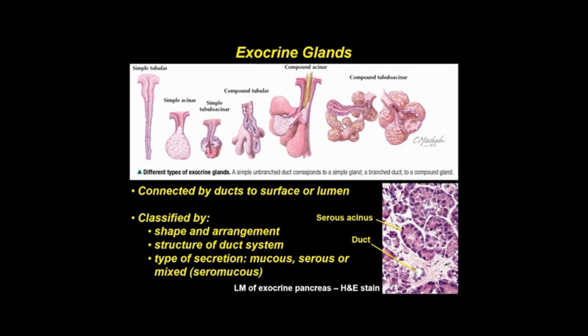Exocrine glands are also grouped by structure of the duct system — simple or unbranched, or compound or branched, as in most organs like the pancreas. They are also classified by type of secretions: mucus, serous, or mixed seromucus.